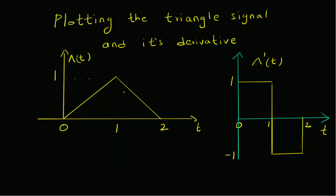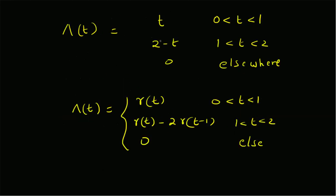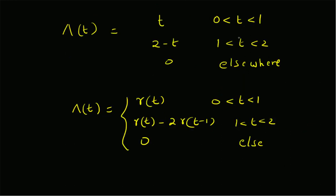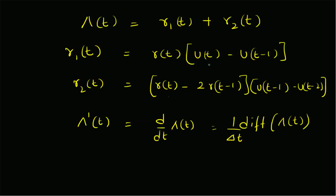To summarize, in this video we looked at plotting the triangle signal and its derivative. The triangle signal is defined as t for the interval zero to one, and two minus t for one to two, and zero elsewhere. Analytically it relates to the ramp signal: r(t) for zero to one, and r(t) minus two times r(t minus one) for one to two. To plot it in MATLAB, for time supports from zero to one or one to two, we use rectangle windows defined as differences between unit step signals. Using the difference function we can also generate the derivative.